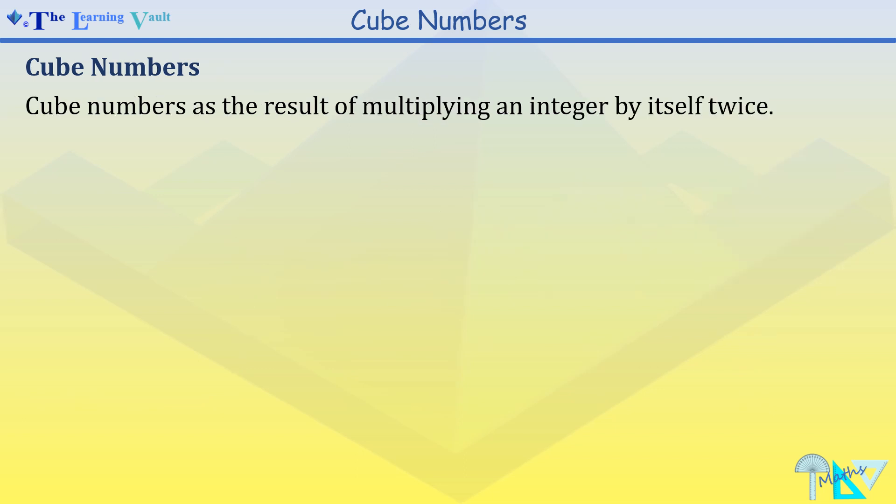Another way of phrasing cube numbers is that it is the result of multiplying an integer by itself twice. So we have n times n times n which is represented as n cubed.